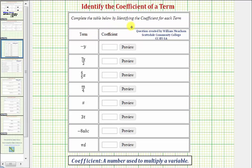We want to complete the table below by identifying the coefficient of each term. A coefficient is a number used to multiply a variable.